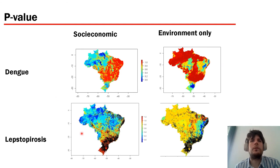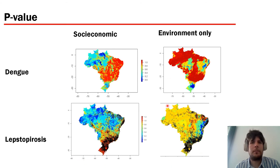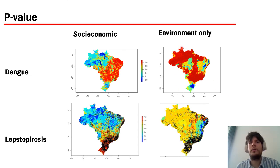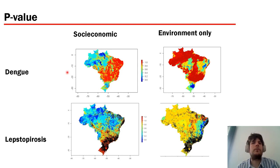Another interesting result is that when we inserted socioeconomic variables, some models that were statistically not significant became significant — like dengue and leptospirosis. These are very prevalent diseases, and you can see how a high-suitability area was marked all over the country. With socioeconomic variables, the model became significant and more precise.